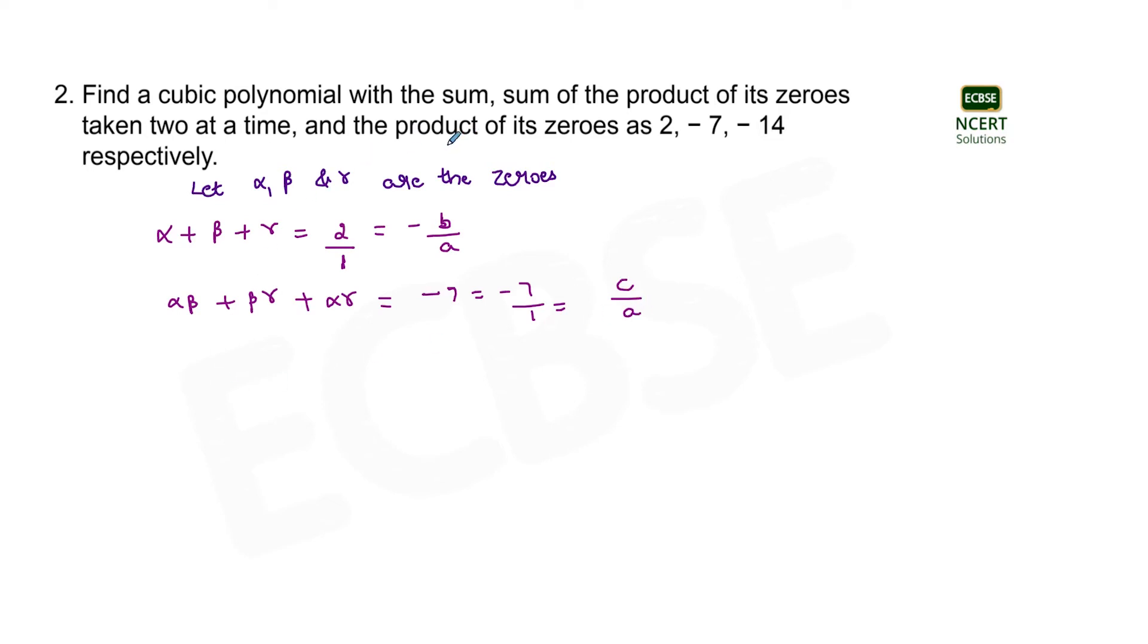Also in the question it's given that the product of its zeros is minus 14. That is alpha into beta into gamma equals minus 14 by 1 which equals minus d by a.